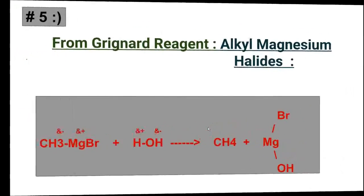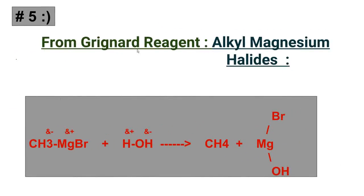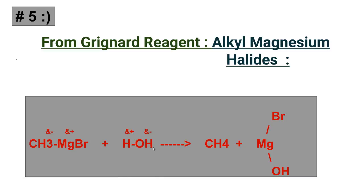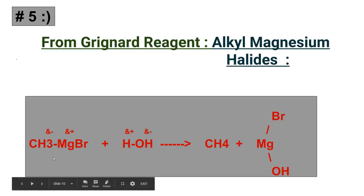Now let's see the preparation of alkane from Grignard reagent. Grignard reagent is alkyl magnesium halide. Magnesium is the second element of the second group of the periodic table and is a metal with a positive charge. Alkyl halides react in anhydrous ether with magnesium to form alkyl magnesium halides, known as Grignard reagent. They decompose on treatment with water or dilute acids to give alkanes.